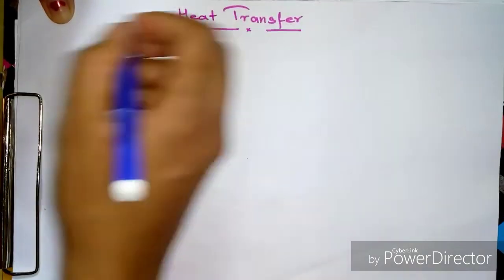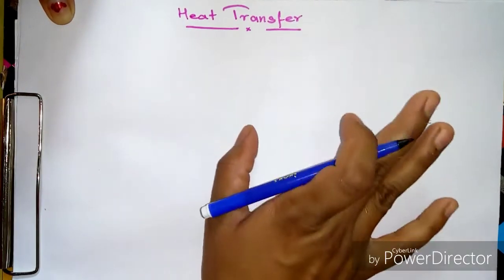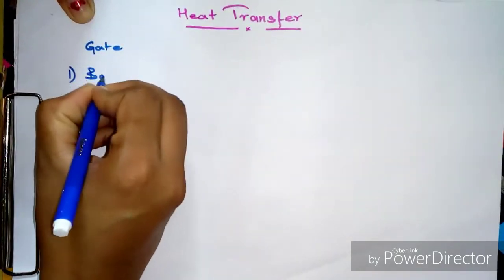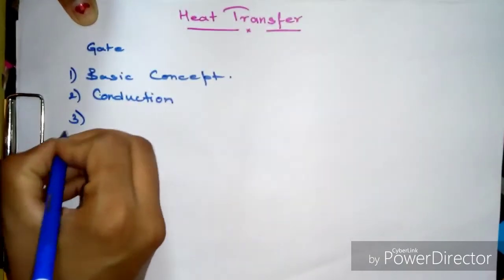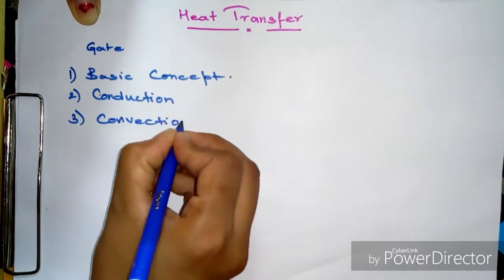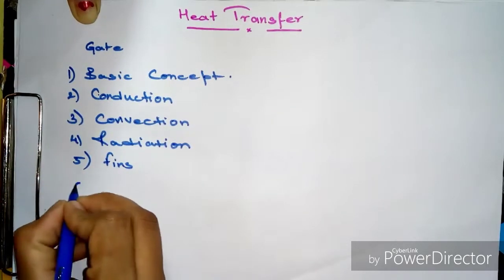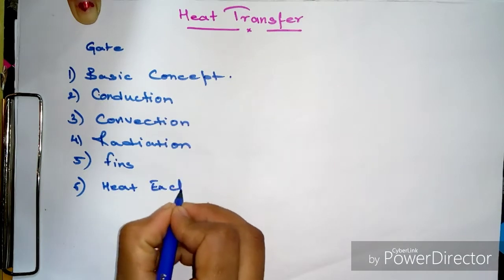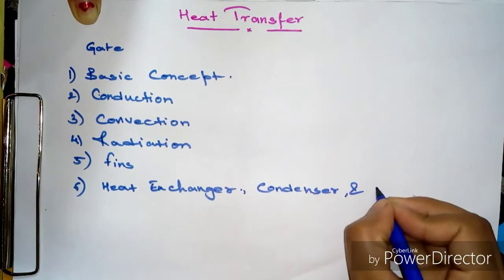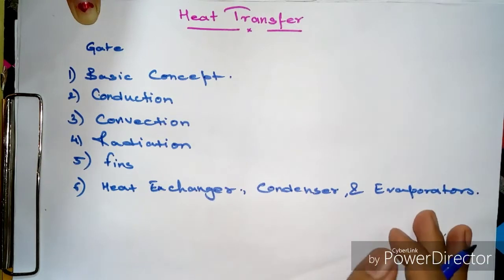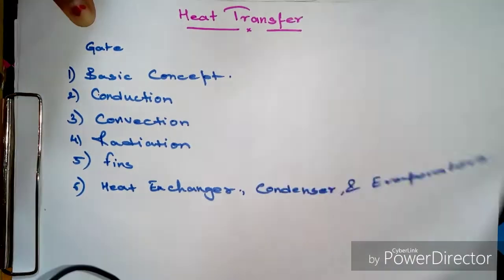Hello everyone, in this lecture we will start a new subject: heat transfer. Heat transfer is the simplest subject for GATE because the whole subject is covered in five to six chapters. According to last year's weightage, this subject carries about six to eight marks in every branch. Our aim is to obtain at least seven marks in this subject. Let's start today's lecture with me, Vandana Singh, and you are watching 99.9 Engineering Station.